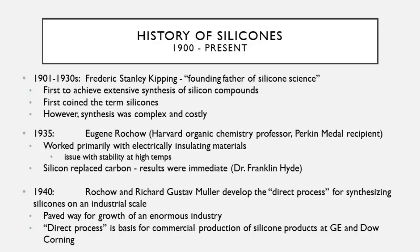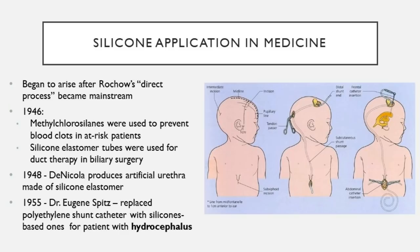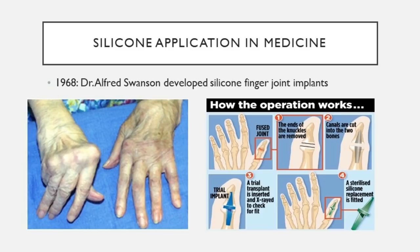With the direct process making silicone mainstream, medicinal applications quickly followed. Starting in 1946, methyl chlorosilanes were used to prevent blood clots, and silicone elastomers were used in surgery to drain blocked bile ducts. Surgeon Robert DiNicolo then used the same silicone elastomers to produce a permanent artificial urethra. A notable example came in 1955 when Dr. Eugene Spitz in Philadelphia replaced often-failing polyethylene-based shunt catheter materials for hydrocephalus treatment with silicone-based ones — pioneering work done at the Children's Hospital of Philadelphia. In 1968, Dr. Alfred Swanson developed silicone finger joint implants for severe arthritis.